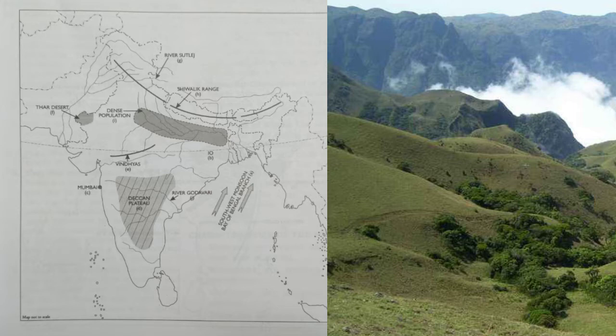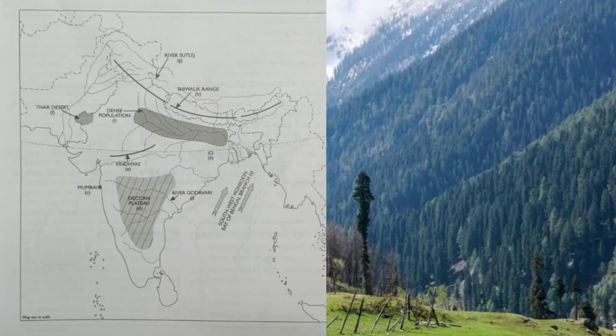Print 'IO' over the region where iron ore is found — broad area showing iron ore as a major resource. Mark with a dot and name the financial capital of India — Mumbai — dot and shade it. Mark and name the Deccan Plateau.